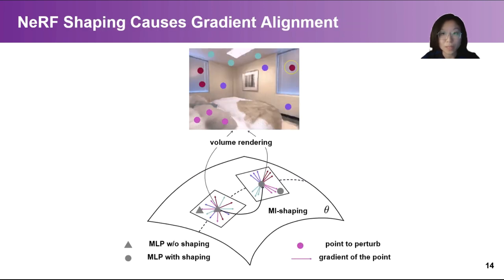Experiments show that this NERF shaping reveals neural correlations. Here, we perturb the network parameters along the gradient of the red point circled, that is, changing the network weights along the gradient.